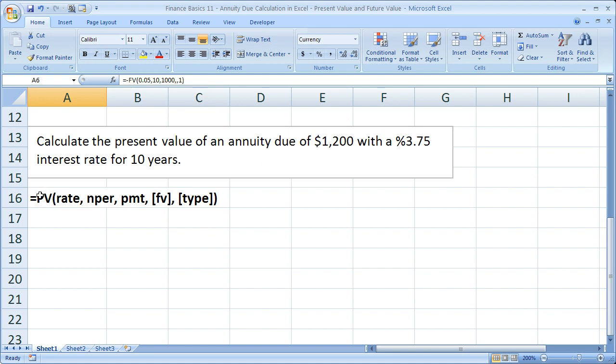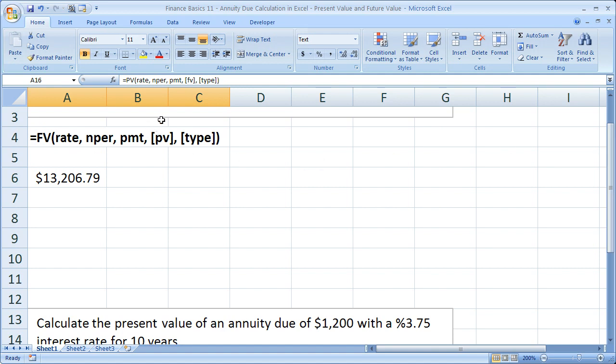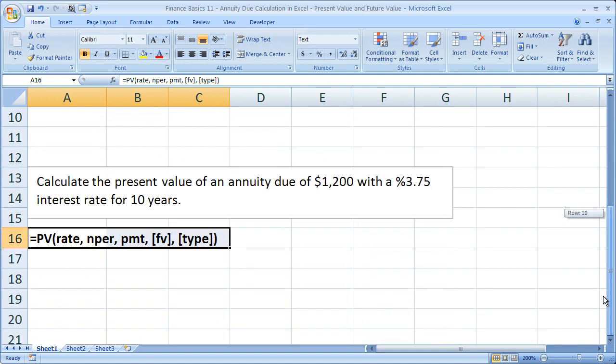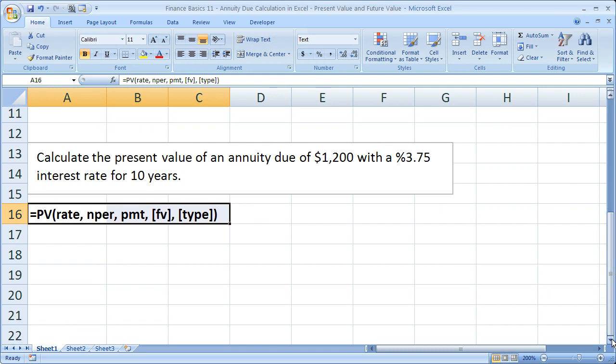So I've got the present value function right here. The only difference between this and the future value is we have an FV for future value right here, whereas up here it's present value. So that's the only difference—really one is just the inverse of the other.